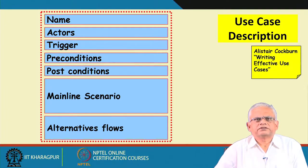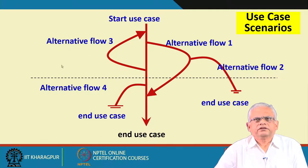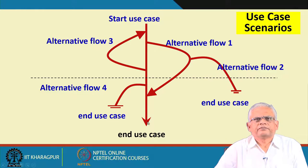We will take a couple of examples and see how we can document a use case. But before we discuss how to document, we need to discuss about use case scenarios. Almost every use case has a number of scenarios. One is called the mainline scenario — the typical case. For example, you want to withdraw cash from a bank ATM: you go there, insert the card, it asks for a PIN, you enter the PIN, enter the cash amount, and that is what typically happens.